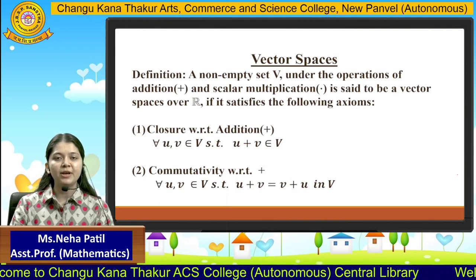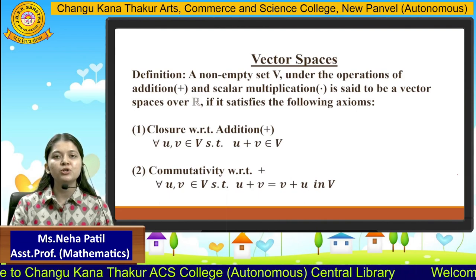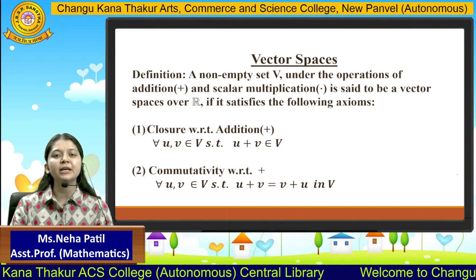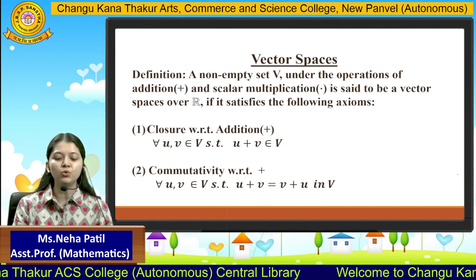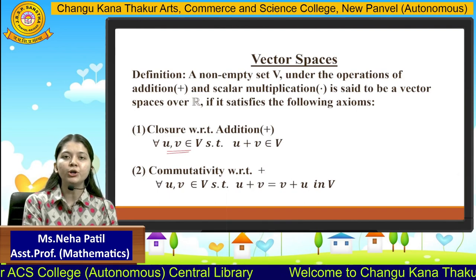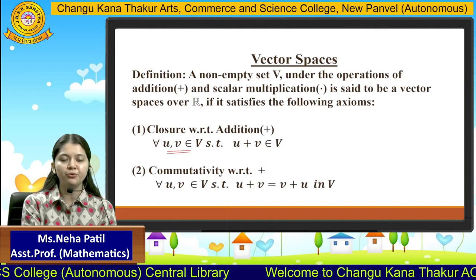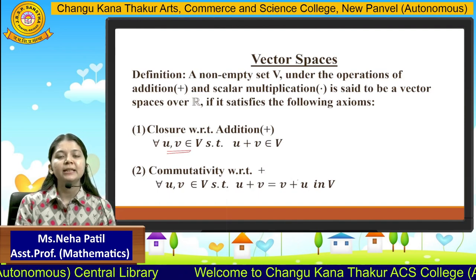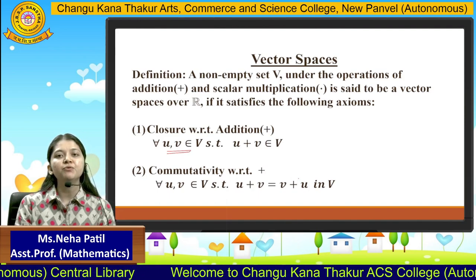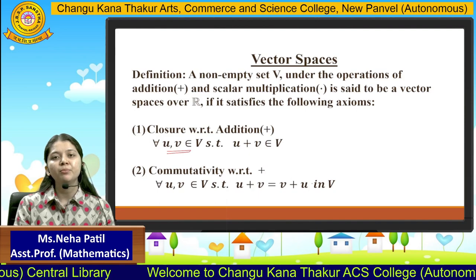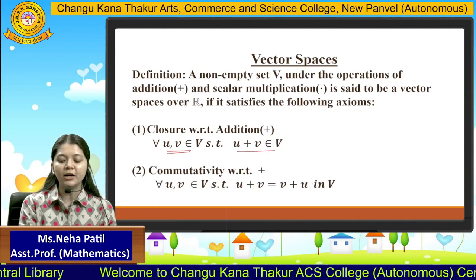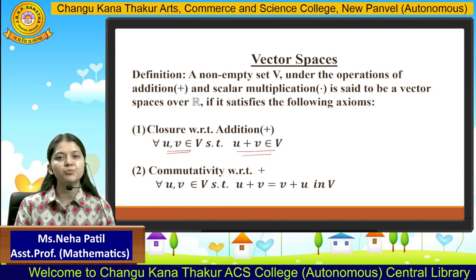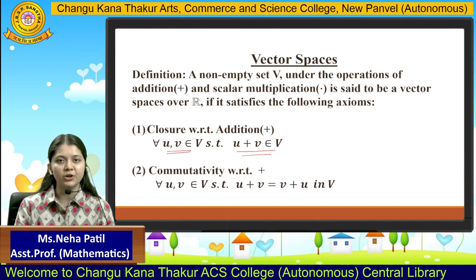The first property is closure with respect to addition. It says that if we take any two elements belonging to the set V, their addition will also belong to the set. If that addition belongs to the set, then the first property is satisfied.